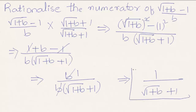So we get this result when we rationalize the numerator of under root 1 plus b minus 1, divided by b. Hope you understood the concept. Do like and subscribe to vdcheckacademy.com. Thanks for watching. Have a nice day.